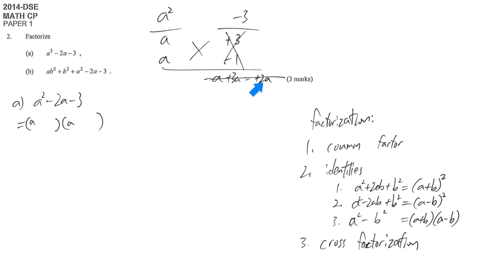But it is quite close because both of them is 2. So we just change the sign: negative 3 times positive 1. So it also fulfills the first requirement. The second one: a plus a minus 3a gives negative 2a.